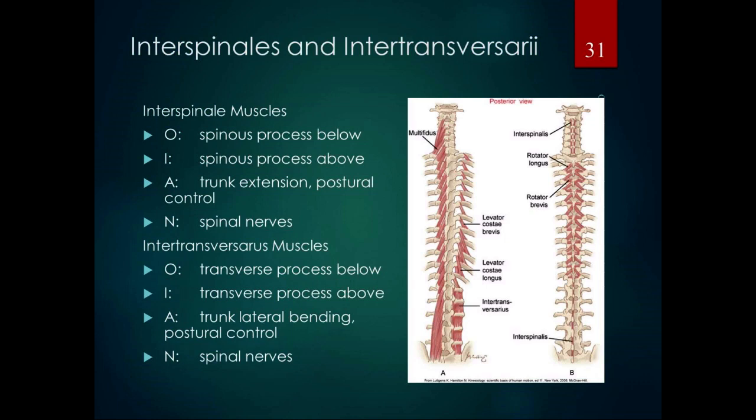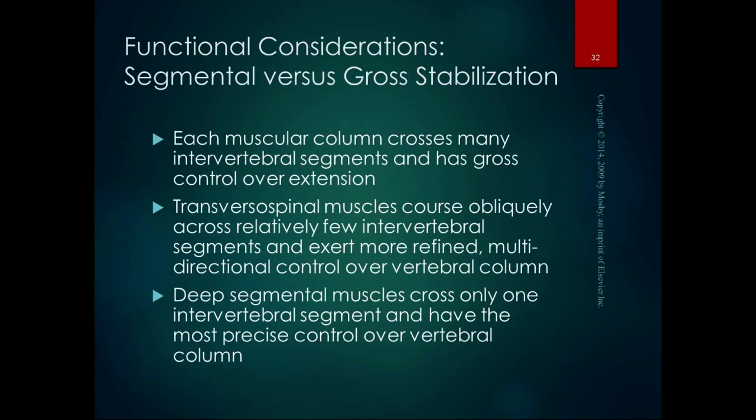In summary of segmental versus gross stabilization: the large erector spinae muscular columns cross many intervertebral segments for gross control over extension. The transversospinal muscles course obliquely across relatively few segments for more refined, multi-directional control. The deep segmental muscles cross only one segment and have the most precise control over the vertebral column. So we go from gross stabilization with the erector spinae to fine, precise control with the deep segmental muscles.